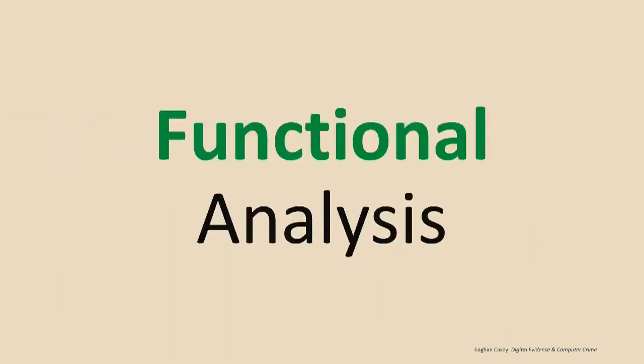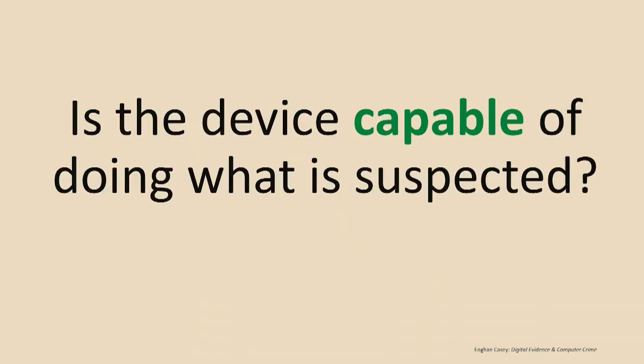Next is functional analysis. You've got to make sure that the device is actually capable of doing what is suspected. For example, if you've got a case where someone is suspected of getting on the internet and transmitting child pornography, how damaging would it be to your case if you got on the witness stand and found out that computer didn't even have a network interface card in it? It's easy to assume things are working as expected — but that's a bad idea.